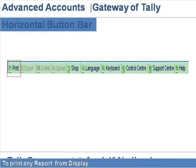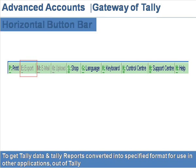P: Print — to print any report from display. E: Export — to get Tally data and Tally reports converted into a specified format for use in other applications out of Tally.